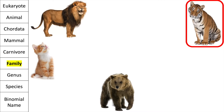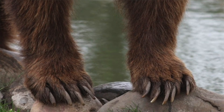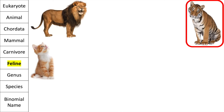What family does the tiger belong to? The tiger is a feline because it has retractable claws, whereas the bear does not have retractable claws. So we can get rid of the bear because it's not a feline. The lion, the tiger, and the domestic house cat all belong to the same family — they're all felines.